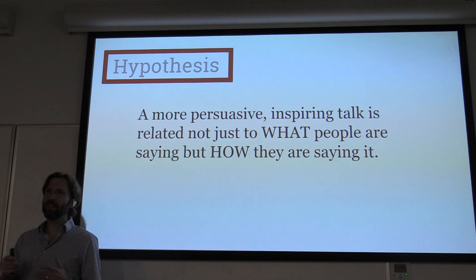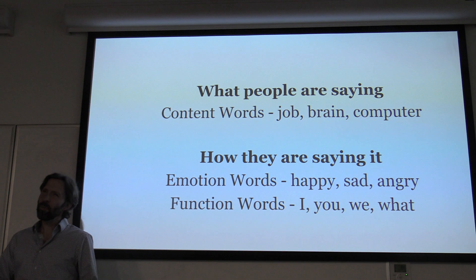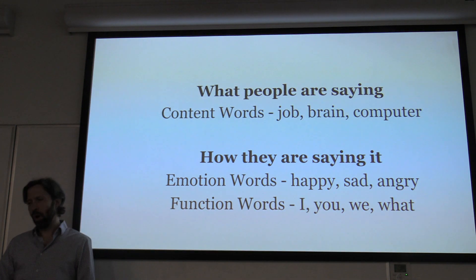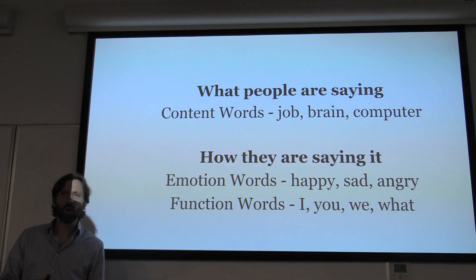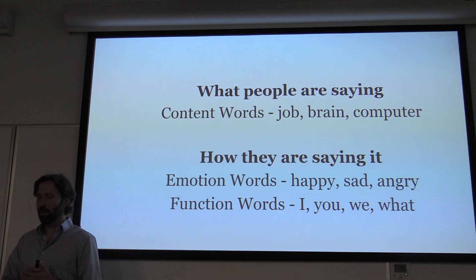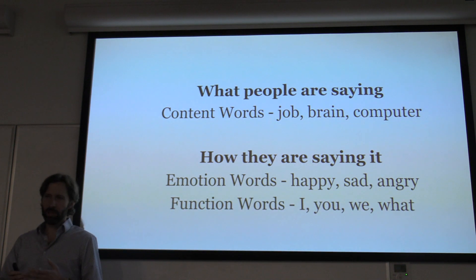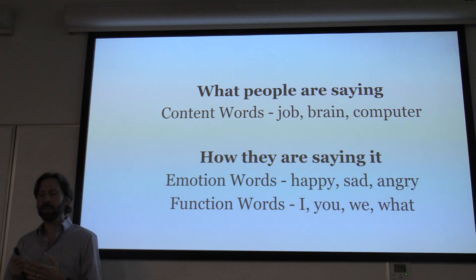So how do we break that down? I thought about what people are saying — these are content words like job, brain, computer. But then there's also how they're saying it, which includes emotion words like happy, sad, and angry, and function words — social words like I, you, we, and what.